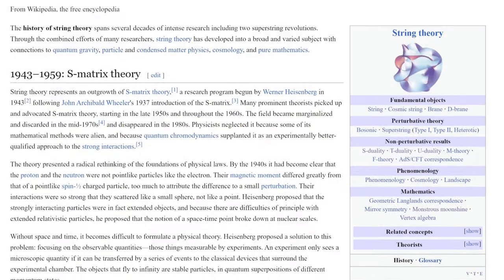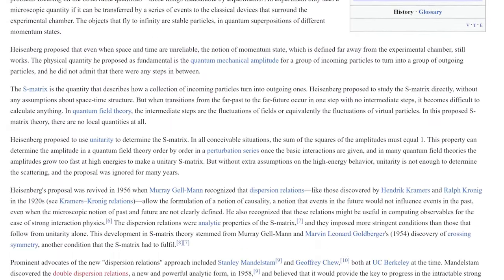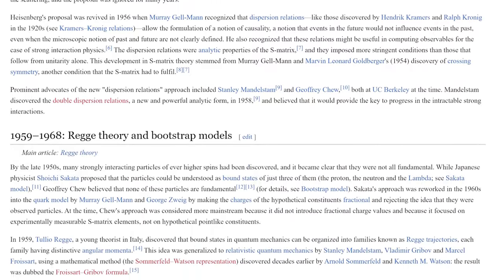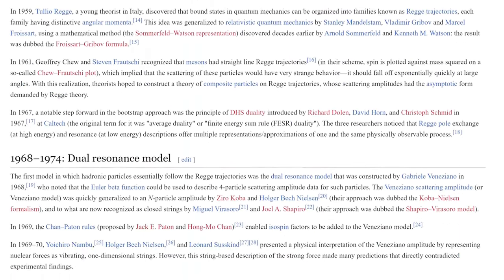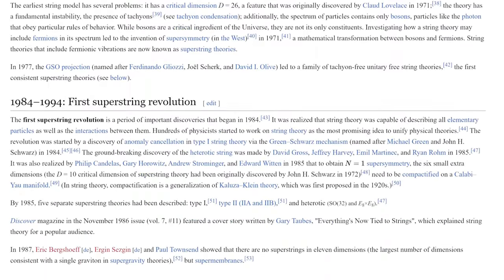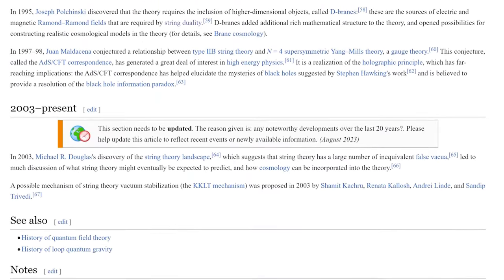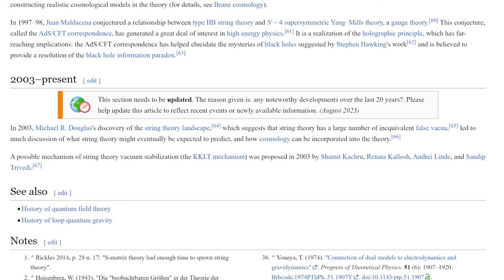Number five, in terms of data showing string theory's decline, as a litmus test, you can see the failure by the lack of Wikipedia entries in the history section of string theory, where every decade prior warranted its own section before the last two decades. Despite thousands and thousands of more people working on string theory than ever before, it only has a single entry. Furthermore, it's the smallest entry.